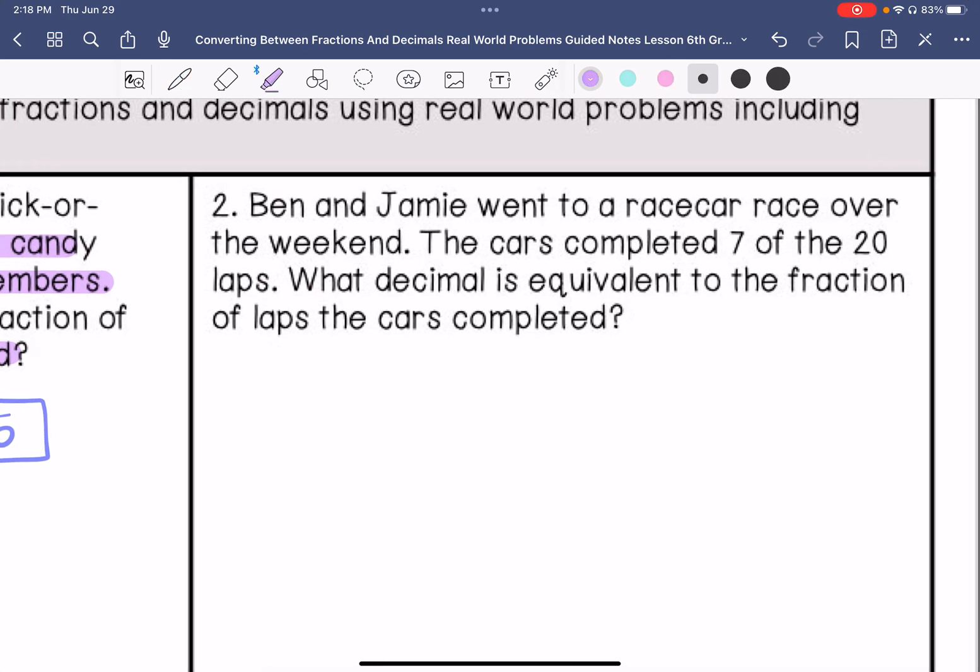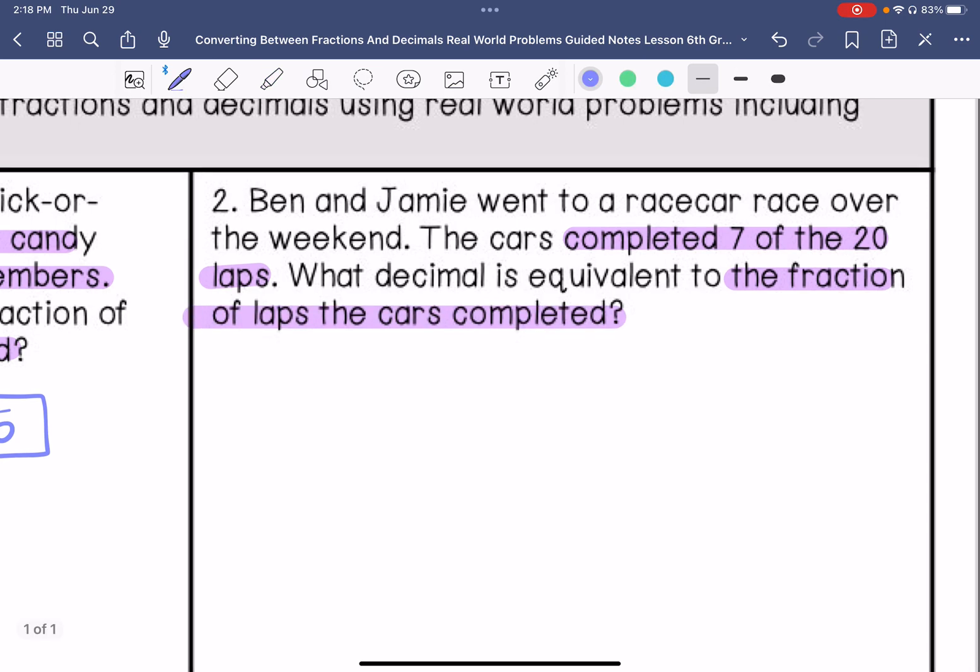Number two, Ben and Jamie went to a race car race over the weekend. The cars completed seven of the twenty laps. What decimal is equivalent to the fraction of laps that the cars completed? So they completed seven out of twenty.